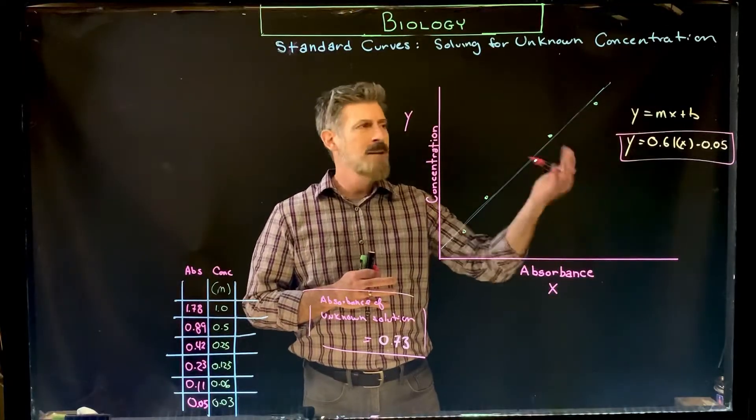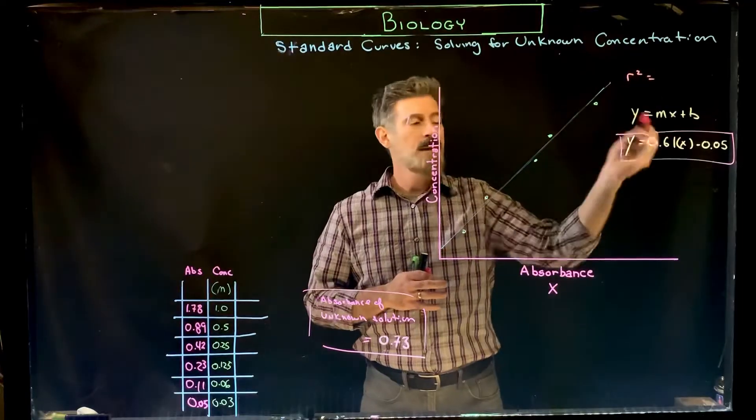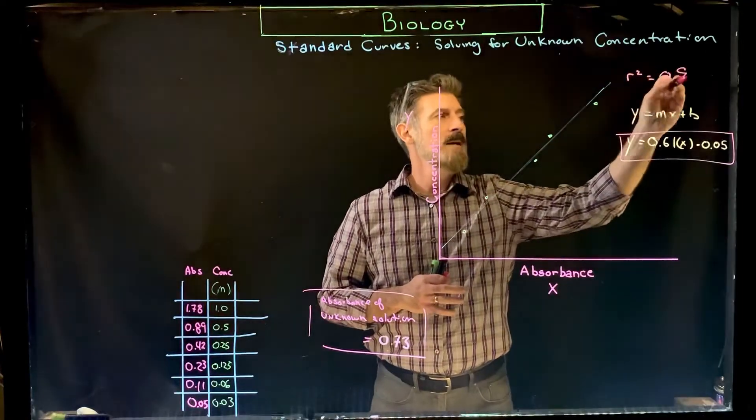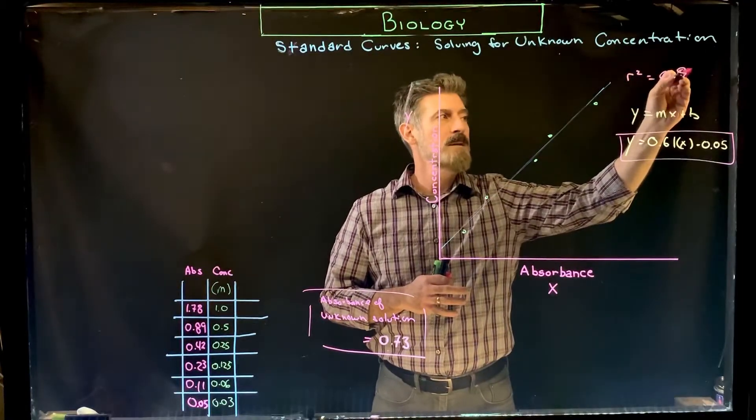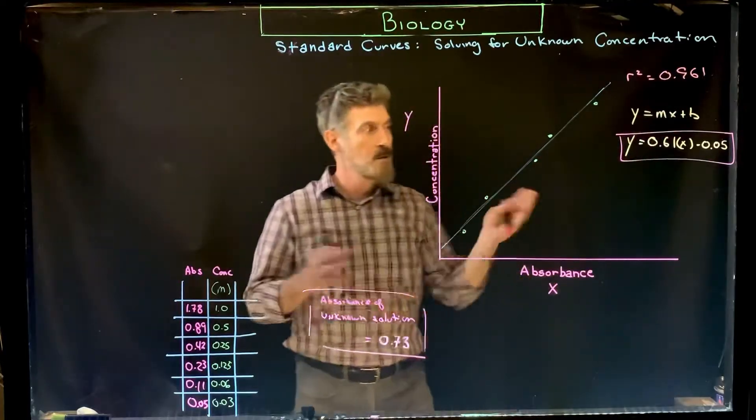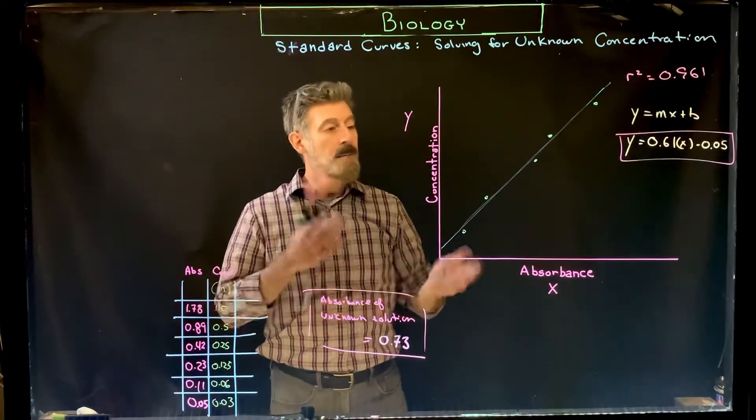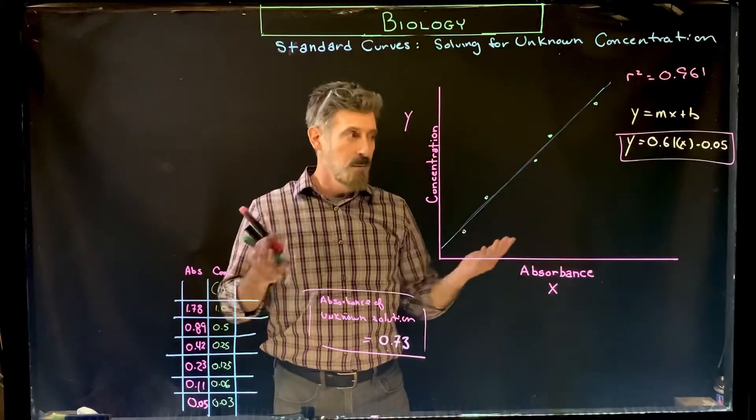You tell it to give you the equation. You can have it give you an r-square value as well and see what that is. Usually it's 0.9 something, let's just say it's 0.961, something like that. It's usually pretty good, pretty close to one. It should be, unless your data is really off.